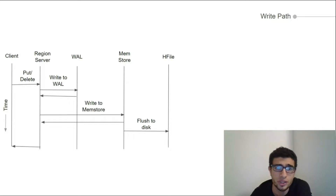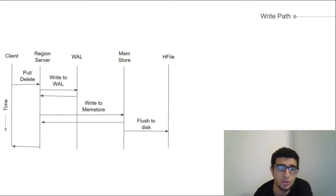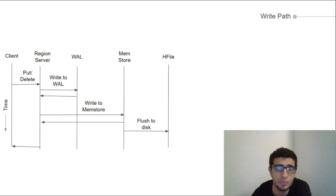Initially, the region server starts writing to a write-ahead log, which is used for recovery. Then changes are stored, sorted in a memory cache called the memstore. Only when the memstore accumulates enough data is it flushed to an HFile in HDFS, in the same sorted manner it was initially written in. It's worth mentioning that changes are immutable in the sense that all updates are appended. The importance of the write-ahead log becomes clear when a region server fails and the content of the memstore is lost — only then can the contents be reconstructed from the write-ahead log.